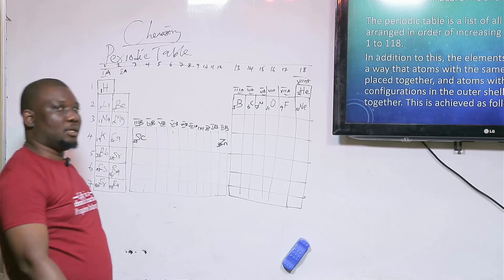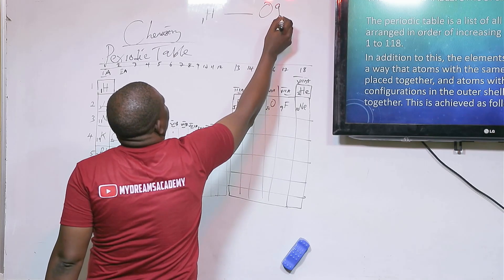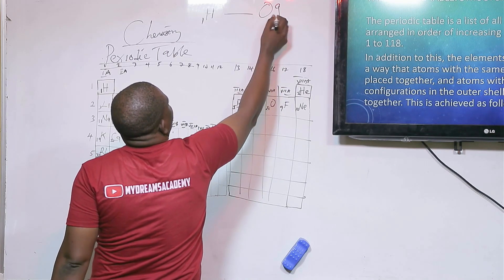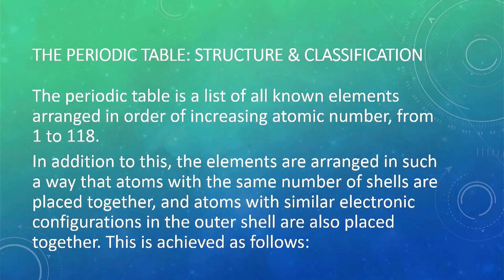The periodic table is a list of all known elements arranged in order of increasing atomic number from 1 to 118, from H to Og. The elements are arranged in such a way that atoms with the same number of shells are placed together. Elements with the same number of energy levels are placed together.